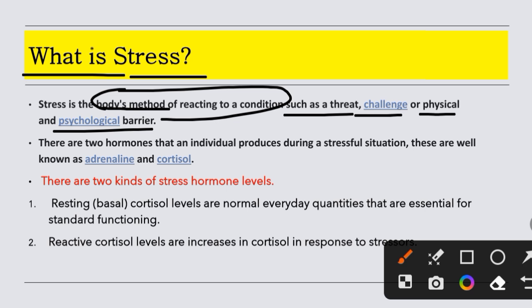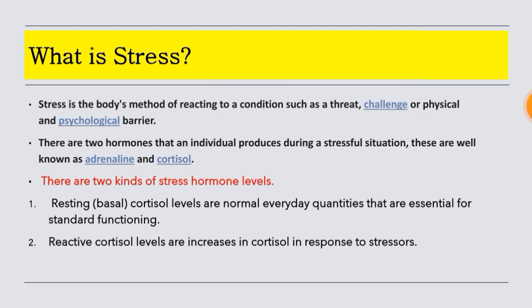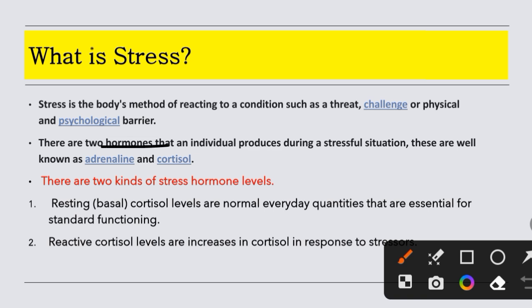Stress is what happens when there is a threat, a challenge, or a physical and psychological barrier, and our body reacts. Our body has two hormones which are individually produced during a stressful situation. One is the adrenaline hormone, secreted by the adrenal gland, and the other is cortisol. When there is a stressful situation, their levels will increase.